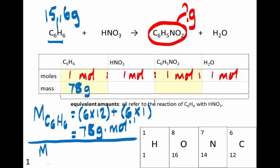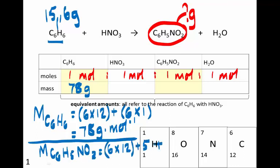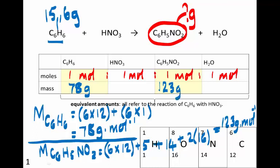We also need the molar mass of C6H5NO2: 6×12 for carbon, plus 5×1 for hydrogen, plus 14 for nitrogen, plus 2×16 for oxygen — giving 123 grams per mole. So 1 mole of nitrobenzene has a mass of 123 grams. The mass ratio in which benzene and nitrobenzene react is 78 grams of benzene for every 123 grams of nitrobenzene.